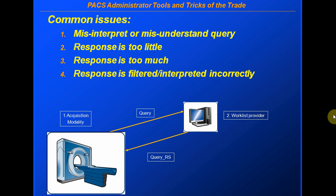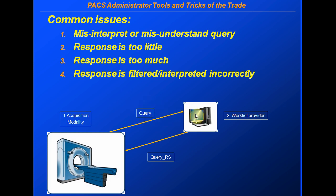The common issues are: number one, misinterpretation or misunderstanding the query. Here's a modality — let's say a CT scanner — that wants to talk to the modality worklist provider. It could be in the PACS, it could be in a RIS, or it could be an independent broker depending on the particular configuration. The query is not correctly interpreted for whatever reason. That would be the number one issue that we want to troubleshoot.